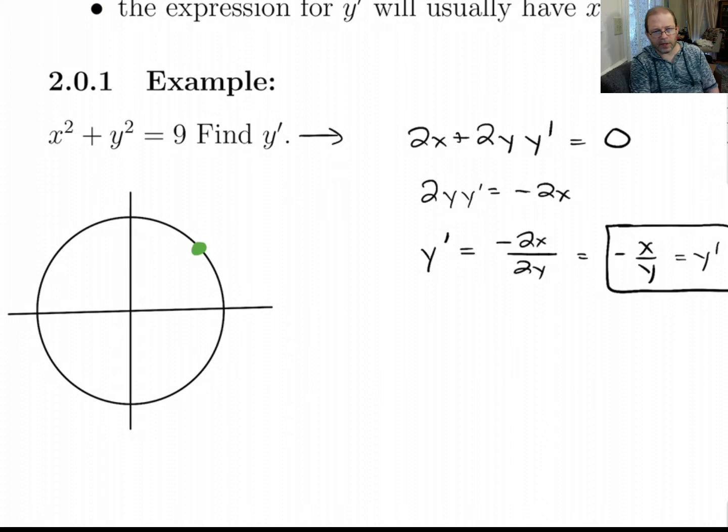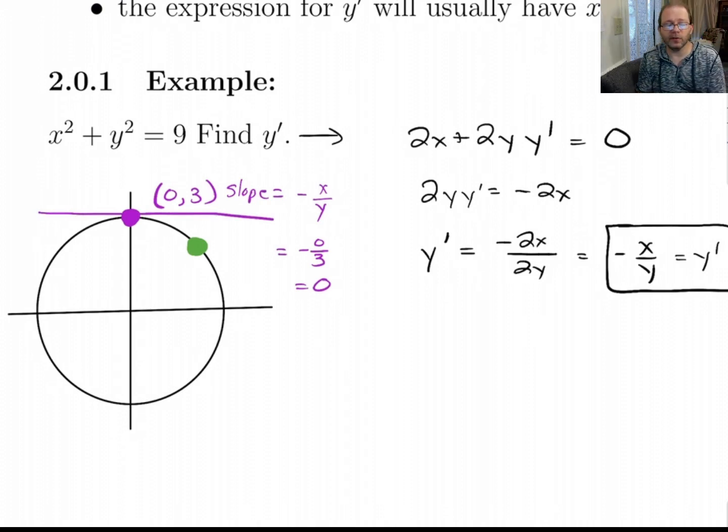And that's the derivative. And that's kind of nice. If you pick a value here, let's say we want to find the slope at this point right here. Or let's not use that point, let's use this point up here. This is the point, let's see, x is 0 and y is 3. So the slope here is minus x over y, which in this case is minus 0 over 3. So the slope there is 0. That makes good sense. If you draw in that tangent line, it's got a 0 slope.